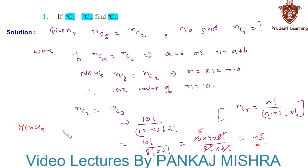Hence, the value of Nc2 is 45. This completes our solution. Let us see the next problem.